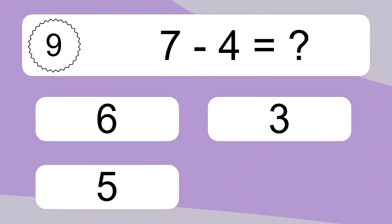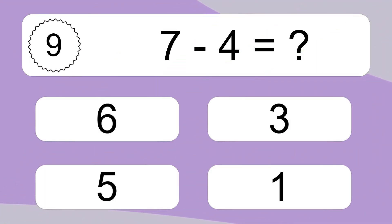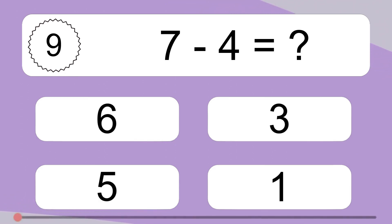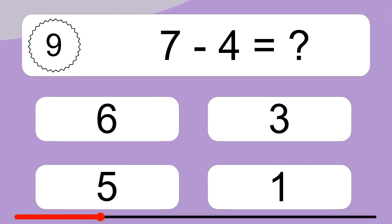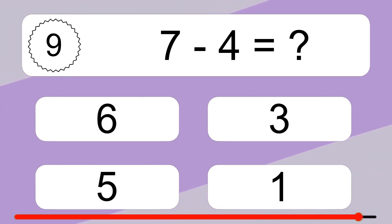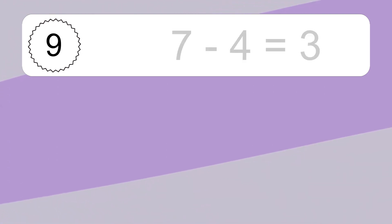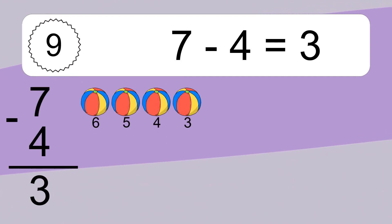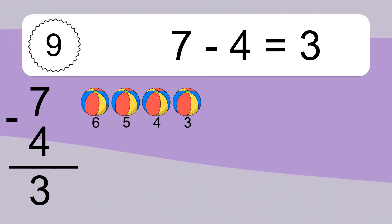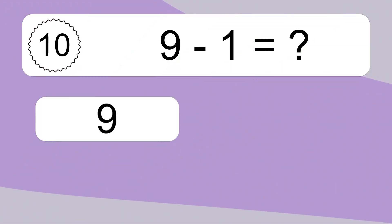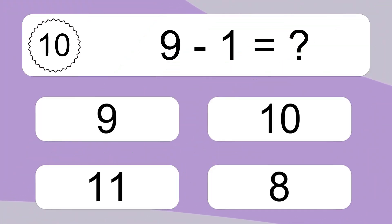7 minus 4 equals what? 7 minus 4 equals 3. Let's count it: 6, 5, 4, 3.